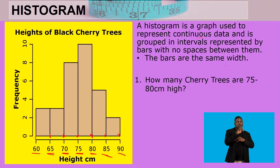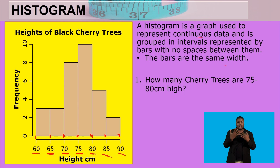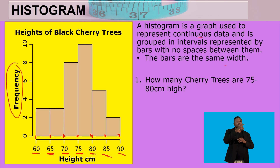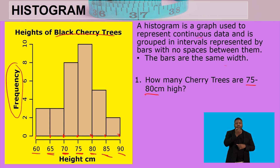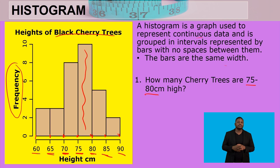Question one asks: how many cherry trees are 75 to 80 centimeters high? We are given the height in centimeters on one axis and the frequency — the number of cherry trees — on the other. Looking at the bar for 75 to 80 centimeters, we can see there are 10 trees that are 75 to 80 centimeters high.